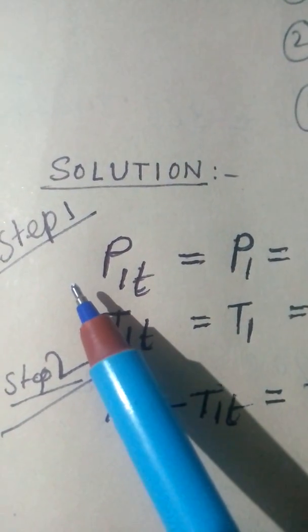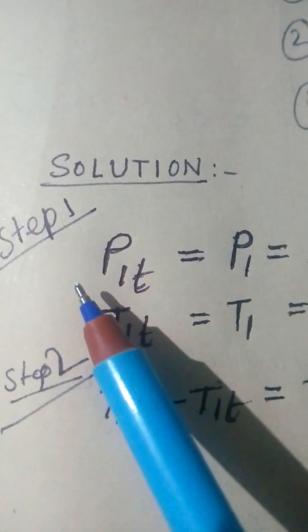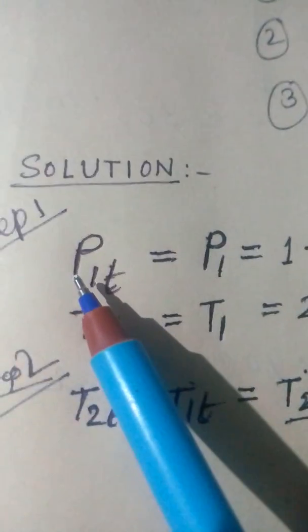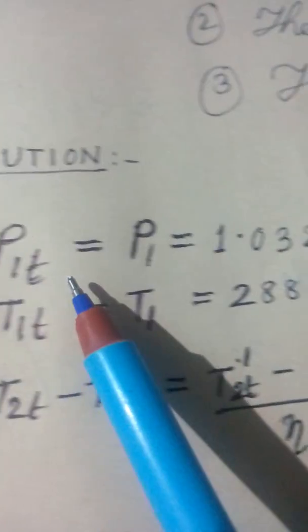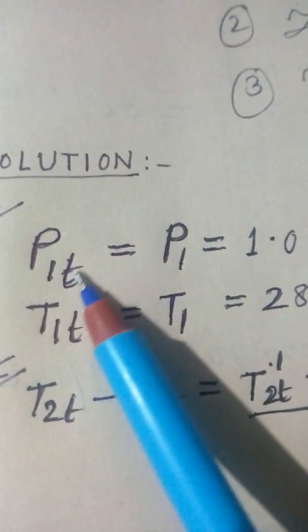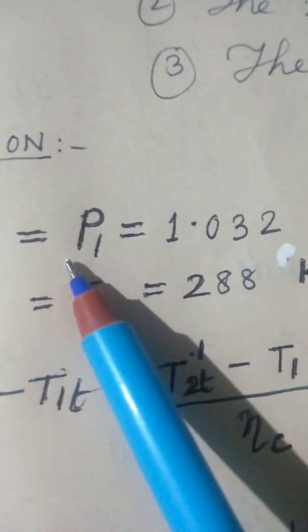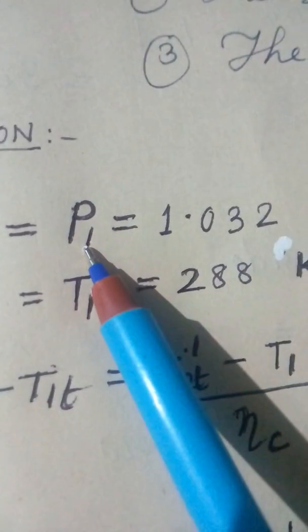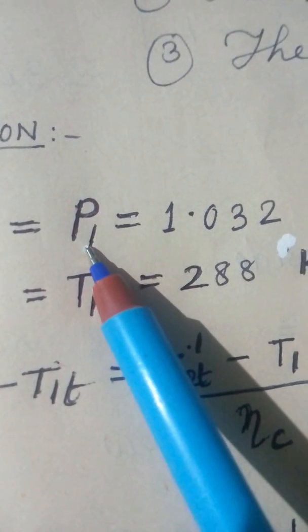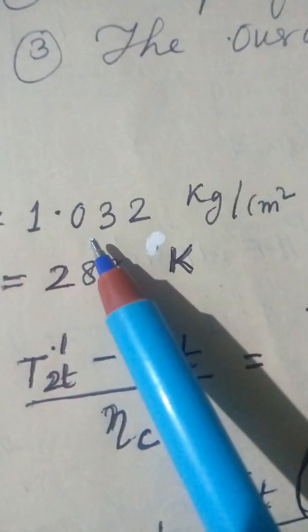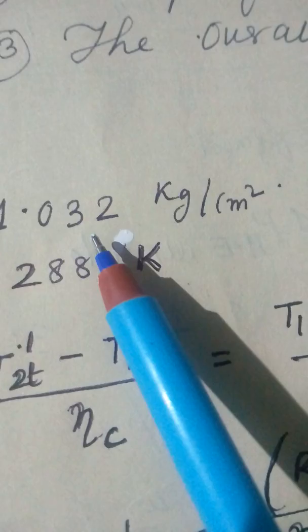First and then you see the video again. Step 1, P1T is the total pressure head at 1, is equal to actually P1. Here there is no dynamic temperature, so this is equal to 1.032 kg per centimeter square.